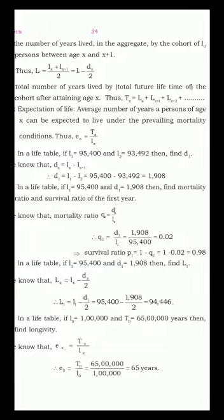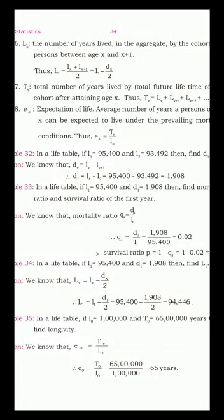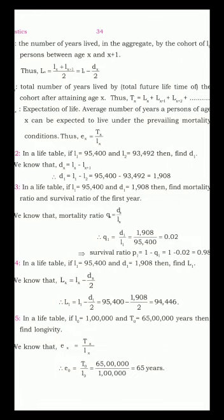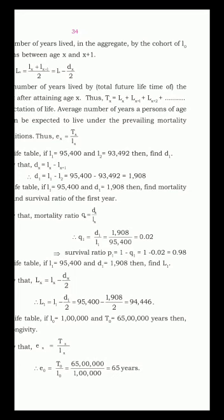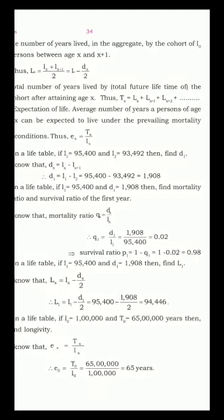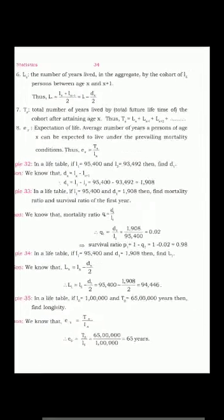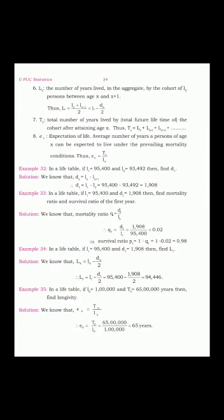The eighth component is ex (small e subscript x) — expectation of life. This is the average number of years a person of age x can expect to live under the prevailing mortality conditions. ex = Tx / lx. Prevailing mortality conditions refer to surviving severe health conditions — even after serious health issues, when we overcome and survive, that is what expectation of life captures.